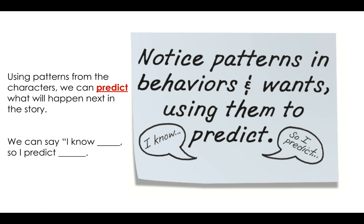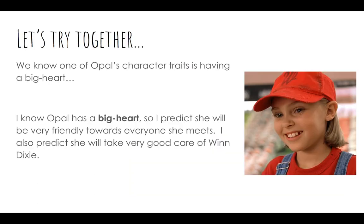Using patterns from the characters, we can predict what will happen next in the story. We can say, 'I know [blank], so I predict [blank].' Let's try this together: we know one of Opal's character traits is having a big heart. I know Opal has a big heart, so I predict she will be very friendly towards everyone she meets. I also predict she will take very good care of Winn-Dixie.